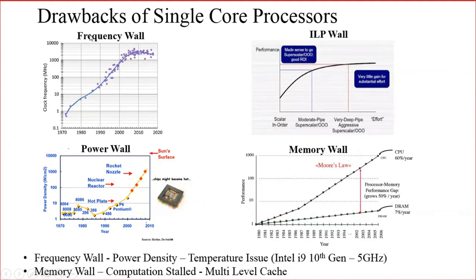The second drawback is known as the ILP wall — instruction level parallelism. We have seen ILP in the previous classes. Initially we had a scalar in-order processor, meaning whatever instructions were written in a program would be executed in the same order they were written.